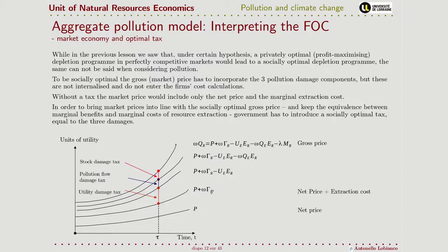This tax should equal the three damage components caused by extracting the resource. Looking at the time scale diagram, we see how the various prices evolve: firms in a competitive market economy would consider only the net price, and the difference between the gross price and that net price is the amount an optimal tax should cover. Importantly, this tax should not be constant — just as the net price grows over time, the tax should also increase with time.